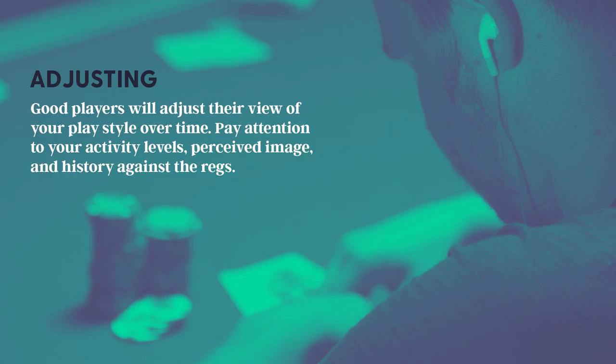The name of the game here is adjusting. We're thinking about what they think about us, and then adjusting our strategy to do the opposite. If they view us as really loose, they're probably not going to fold to us very often — so we can value bet thinner. If we are playing really tight, they're probably not going to want to give our aggression action, so we adjust by bluffing more often.